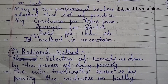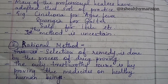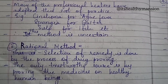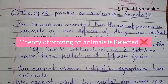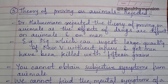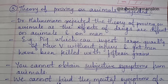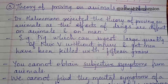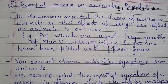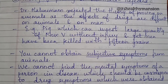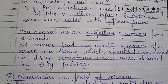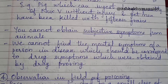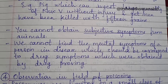The rational method: selection of remedy is done by the process of drug proving. The only trustworthy source is by proving the medicines on healthy human beings. The theory of proving on animals is rejected. Dr. Hahnemann rejected the theory of proving on animals as the effects of drugs are different on animals and on man. For example, a pig can ingest large quantities of Nux vomica without injury, and yet men have been killed with 15 grains. You cannot obtain subjective symptoms from animals — we cannot find the mental symptoms of a person in disease which should correspond to drug symptoms obtained by drug proving.